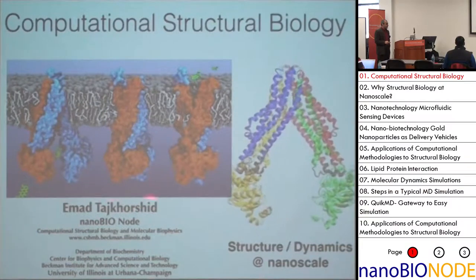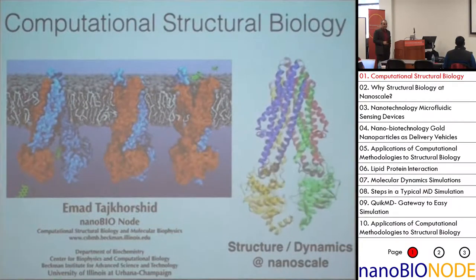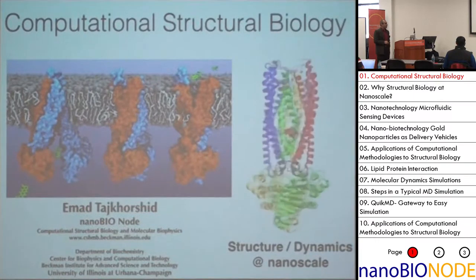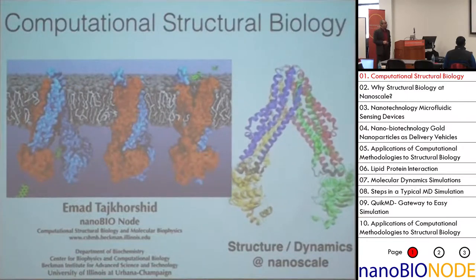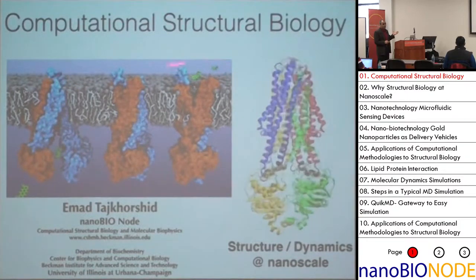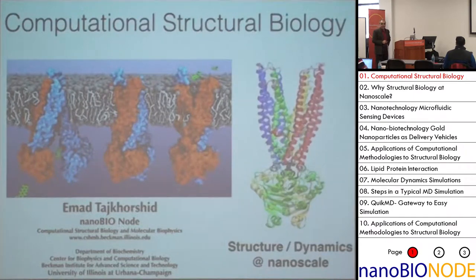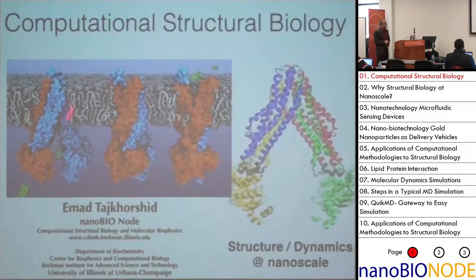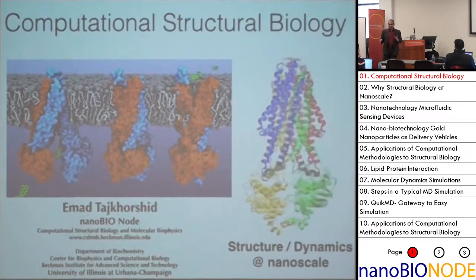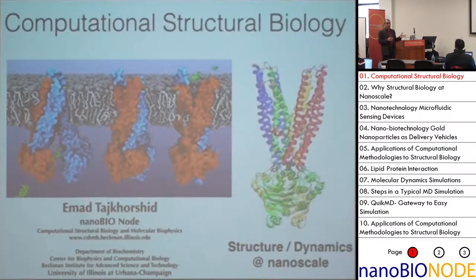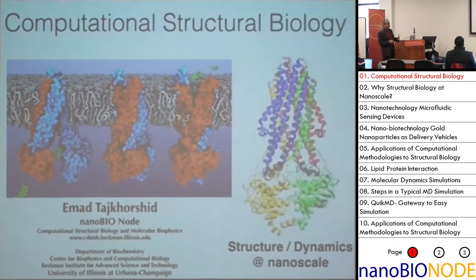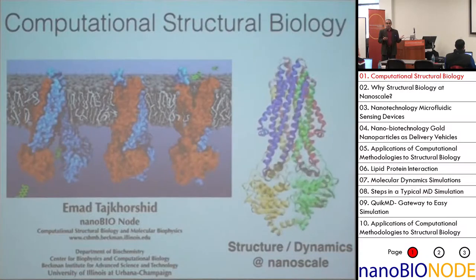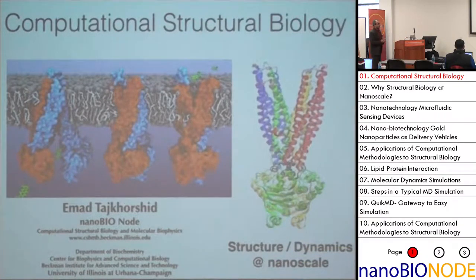My name is Ahmad Taj Khorshid — probably you're not going to remember the last name, but Ahmad is easy to remember. I'm one of the investigators of the nanobionode here and also affiliated with some departments. I'm a computational structural biologist by training, and I will be talking about the field, especially since the idea of today is for you to move into biological systems and see how we might integrate biological systems into the kind of measurements and computational tools you have been using.